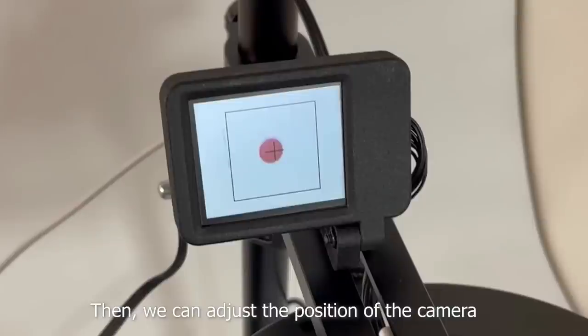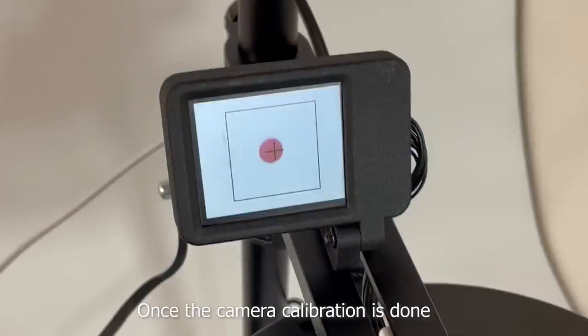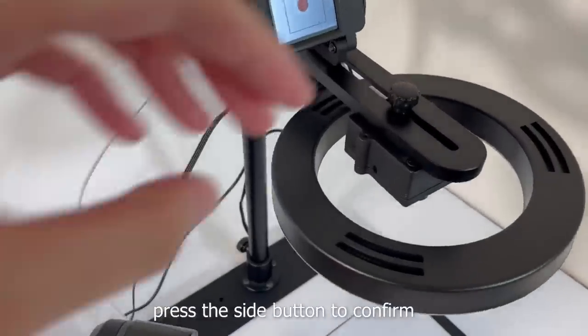Then, we can adjust the position of the camera to make the red circle appear at the cross. Once the camera calibration is done, press the side button to confirm.